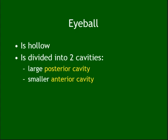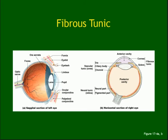The anterior cavity has an anterior chamber and a posterior chamber. The iris divides them. The anterior cavity is filled with aqueous humor; the posterior cavity is filled with vitreous humor. Aqueous humor is made at the ciliary body, circulates to keep the shape of the cornea, and leaves through the canal of Schlemm.